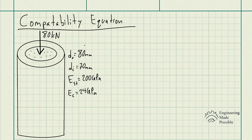The problem statement is: a steel pipe is filled with concrete and subjected to a compressive force of 80 kilonewtons. Determine the normal stress in the concrete and the steel due to this loading.